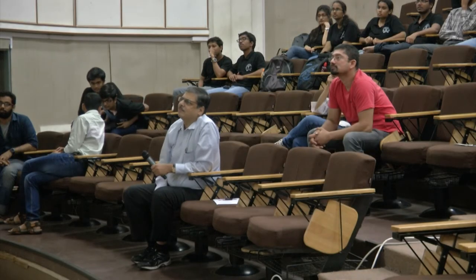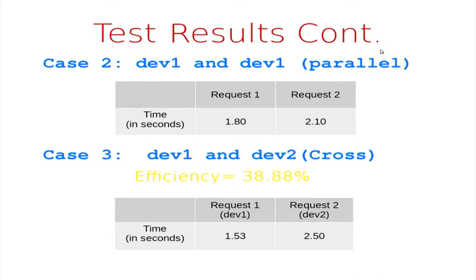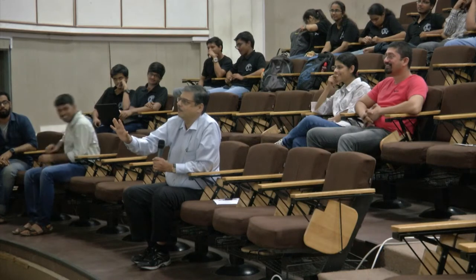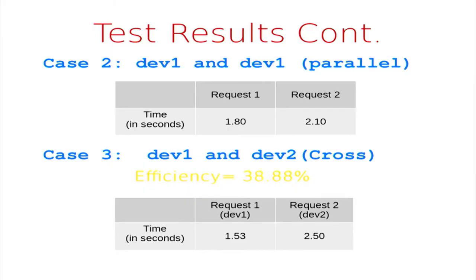The team clarified they tried it with around 10,000 lines of code, but for demonstration purposes chose a smaller example. The evaluator agreed in principle but emphasized: I believe you, but you have not proved it. Believing and proving are two different things. Showing two servers side by side without a rigorous timing methodology is not proof.